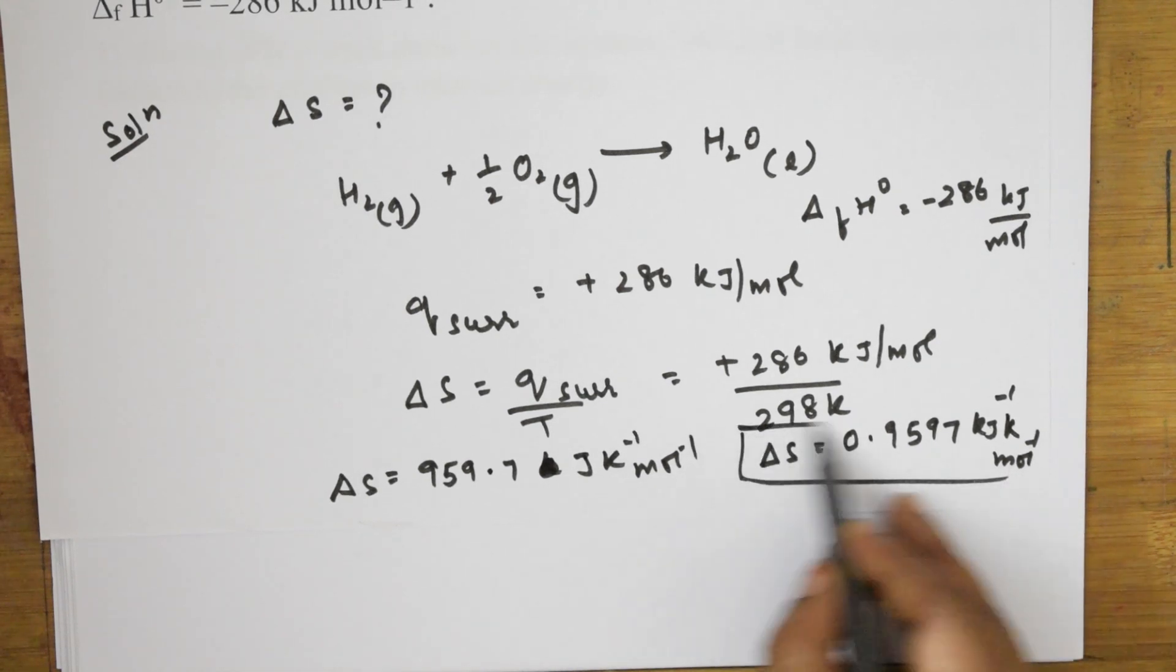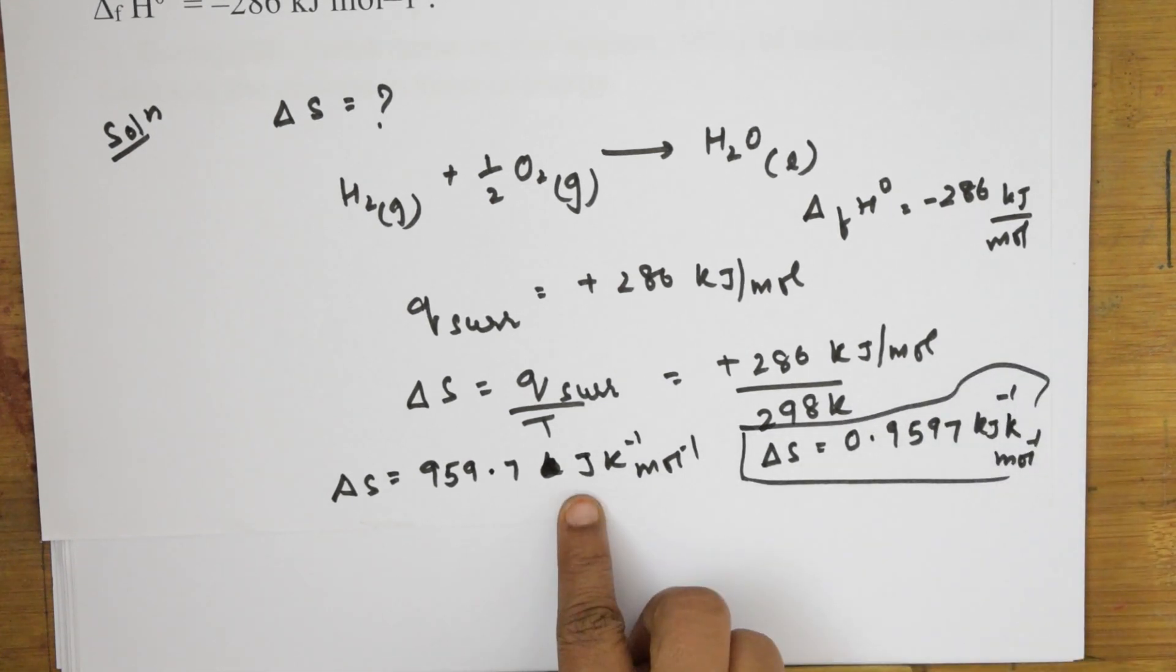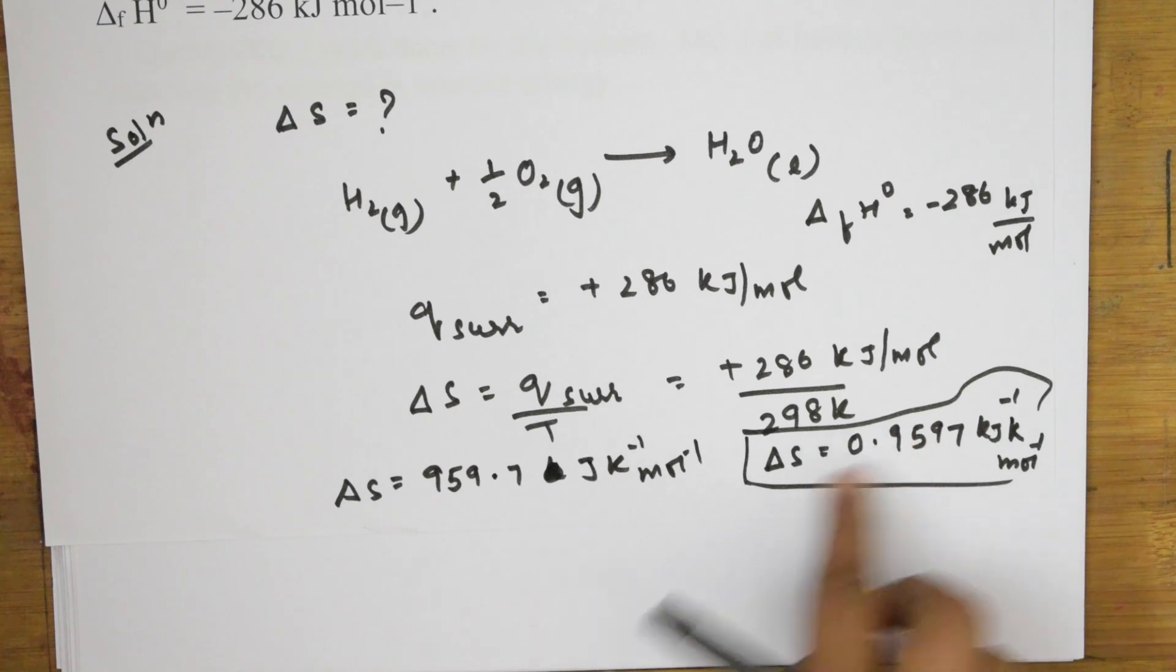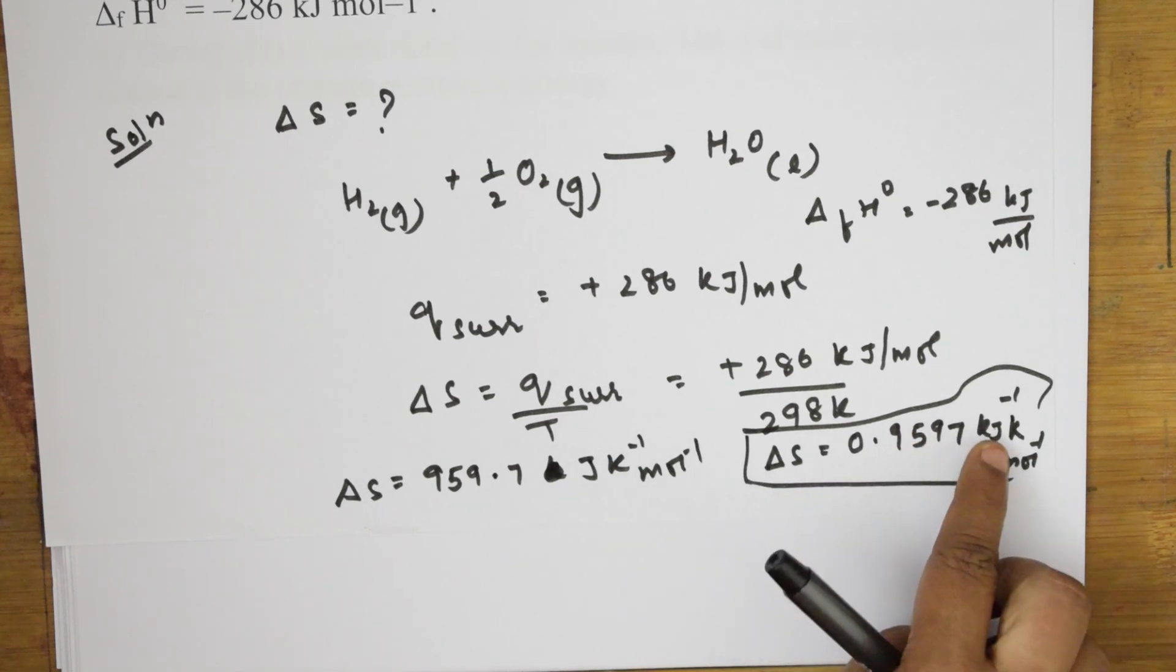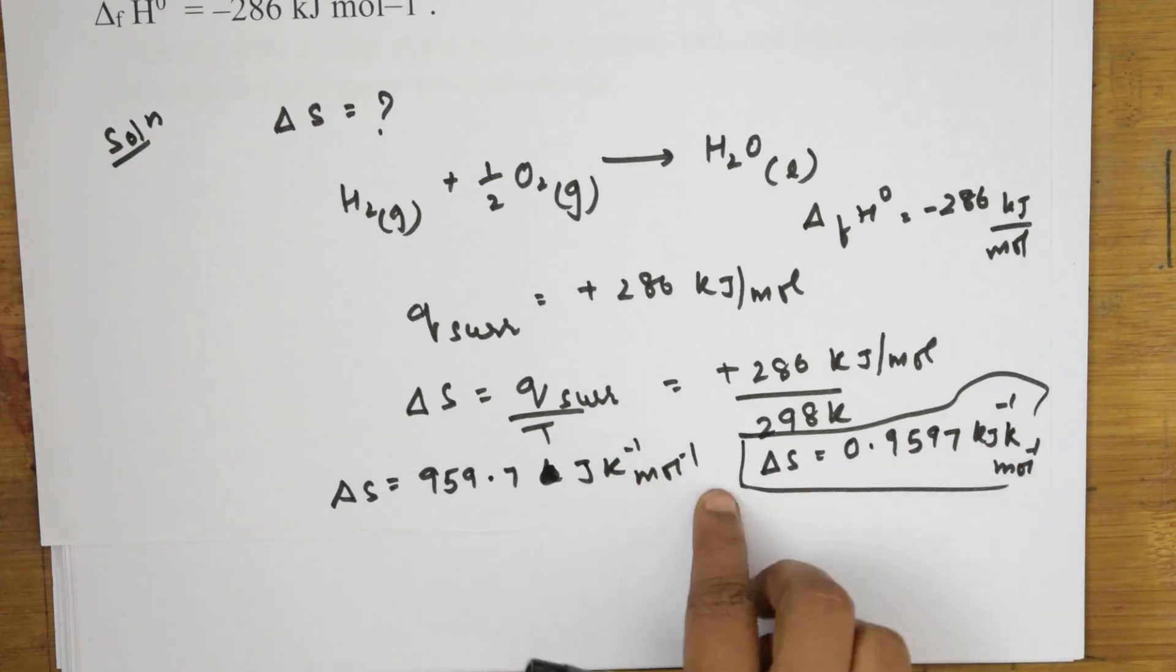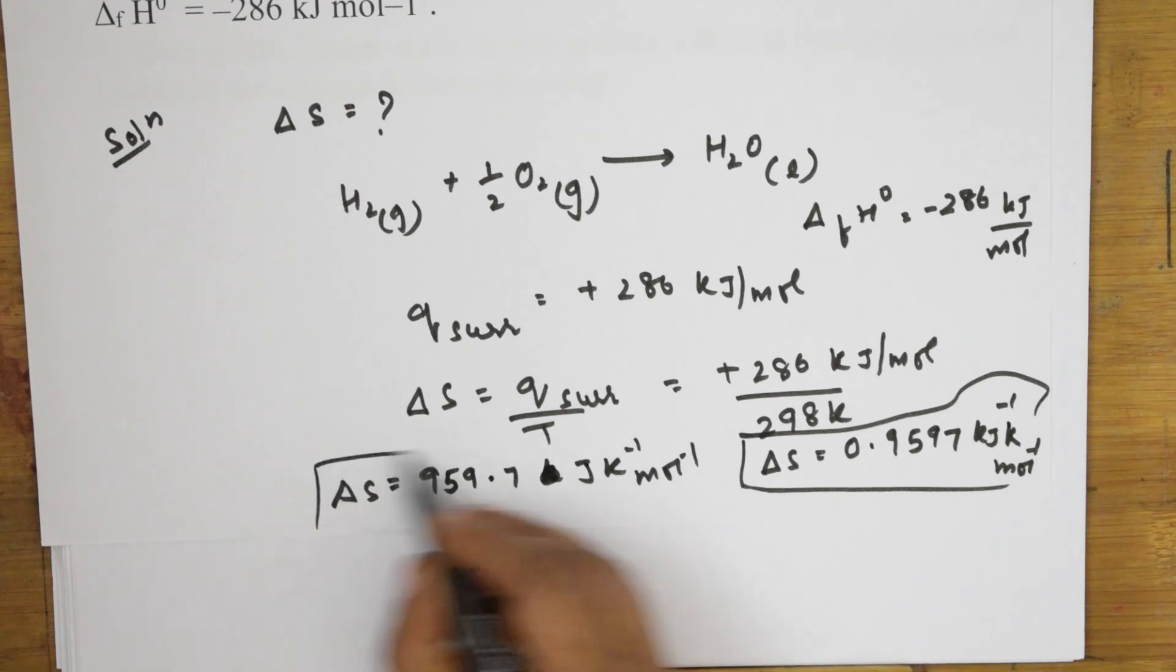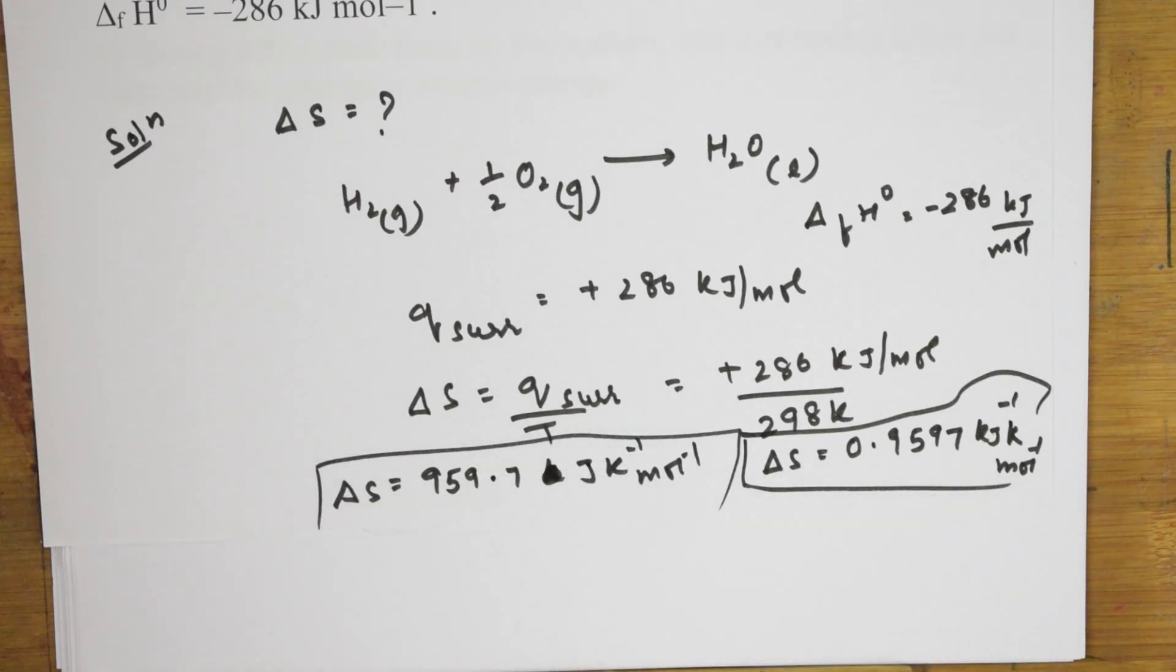Why did I write this? See here I will tell you. So, shift the decimal. So, that kilo will go out. Left with J Kelvin inverse, mole inverse. So, this is one more answer. Hope students you are clear with the concept.